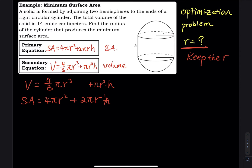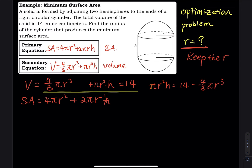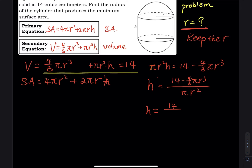We use the volume equation, set equal to 14, to express h in terms of r. Starting from π r²h = 14 − (4/3)π r³, we solve for h: h = [14 − (4/3)π r³] / (π r²), which simplifies to h = 14/(π r²) − (4/3)r.